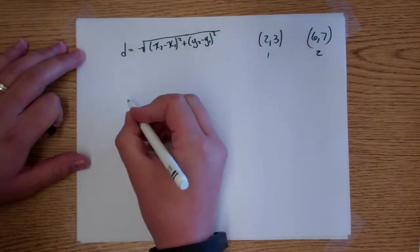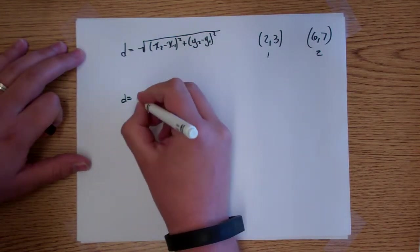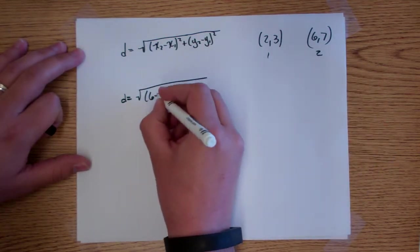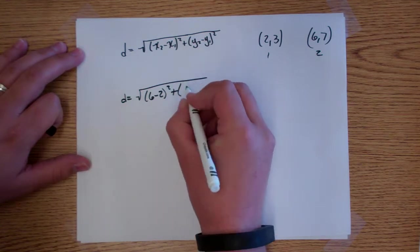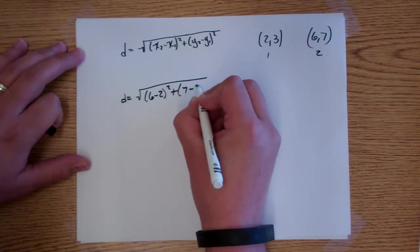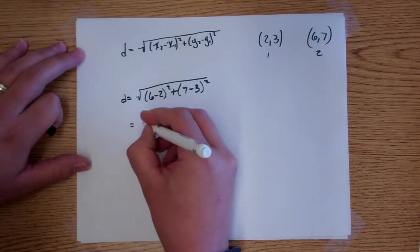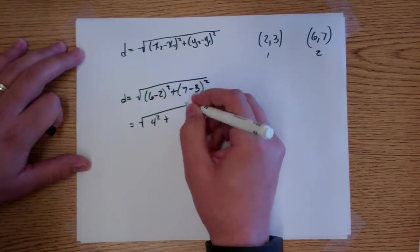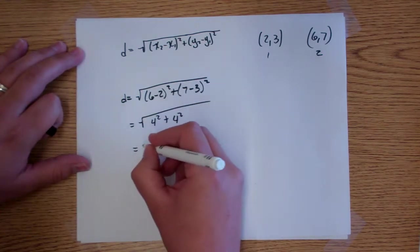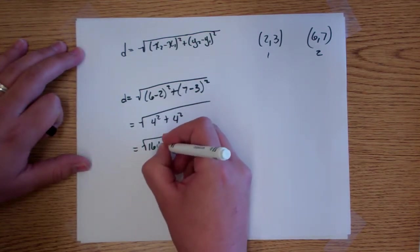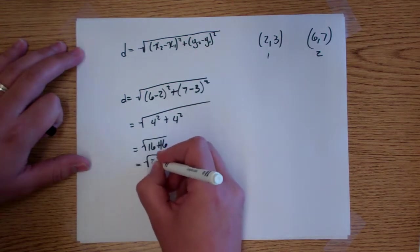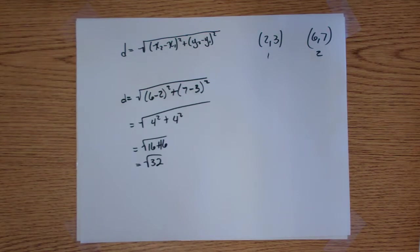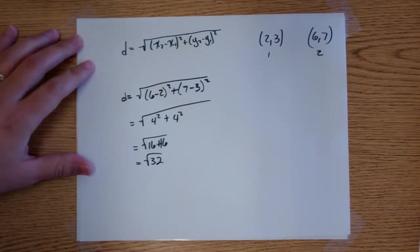So the distance between these two points would be the square root of (6 minus 2) squared plus (7 minus 3) squared. That's the square root of 4 squared plus 4 squared, which is the square root of 16 plus 16, which is the square root of 32.